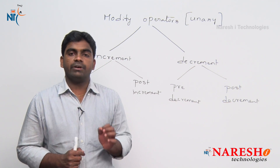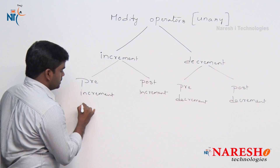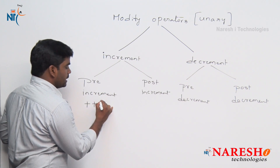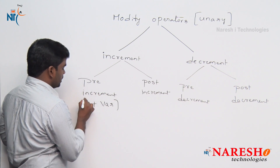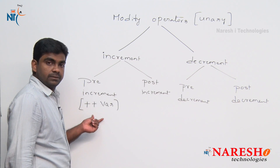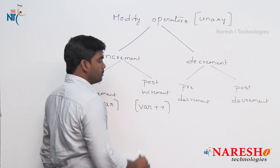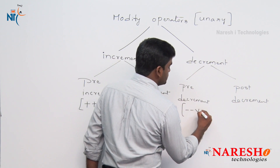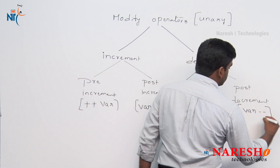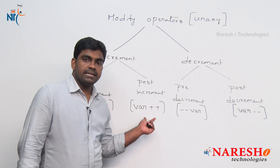How to use modify operators — either increment or decrement operators: pre-increment means the operator must be used in front of the variable, so before the operand we place two plus symbols (++VAR). Post-increment means followed by the variable: VAR++. Pre-decrement means --VAR, and post-decrement means VAR--. This is the usage of increment and decrement operators.